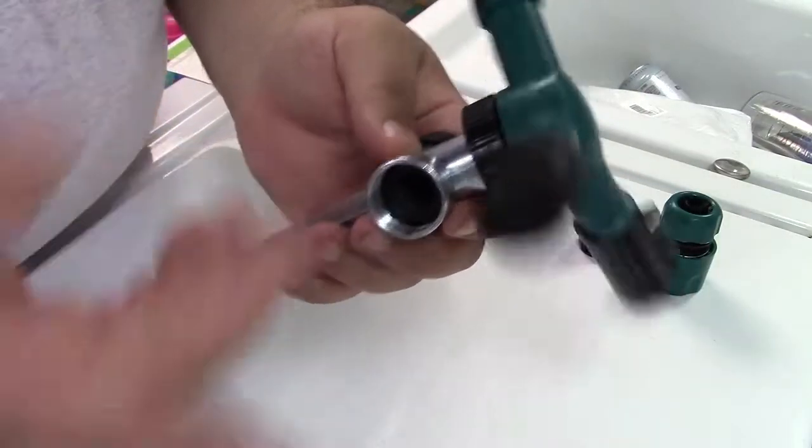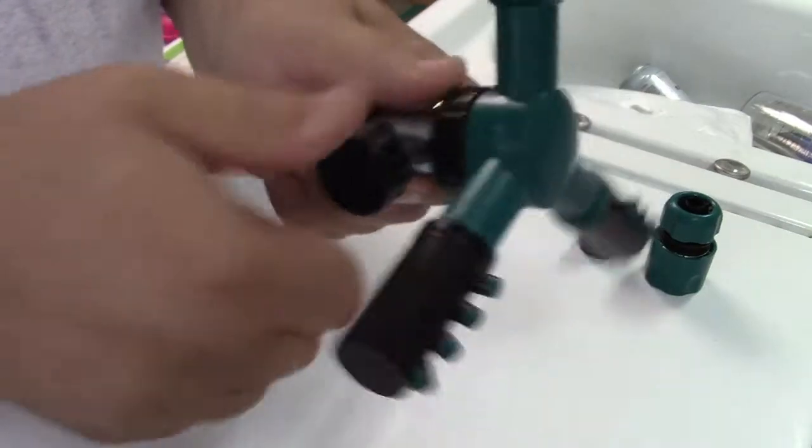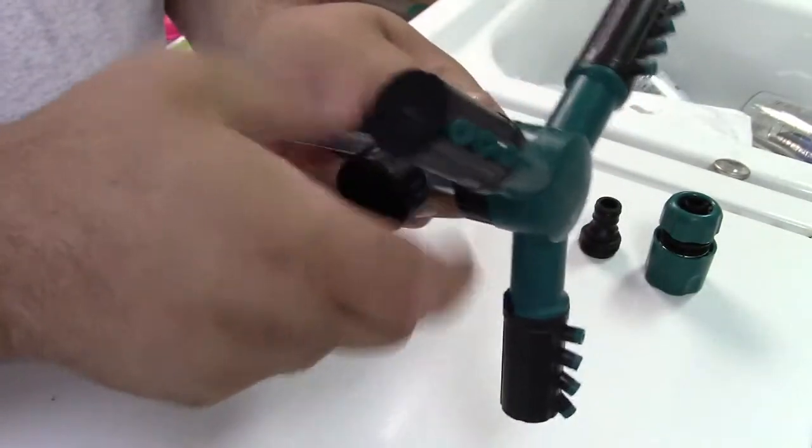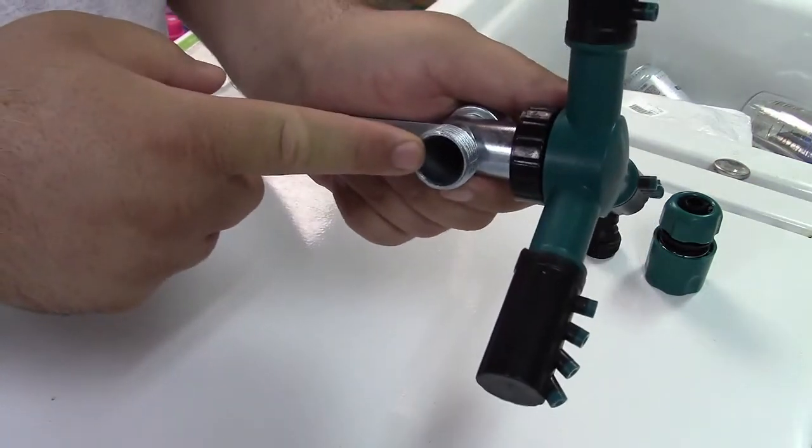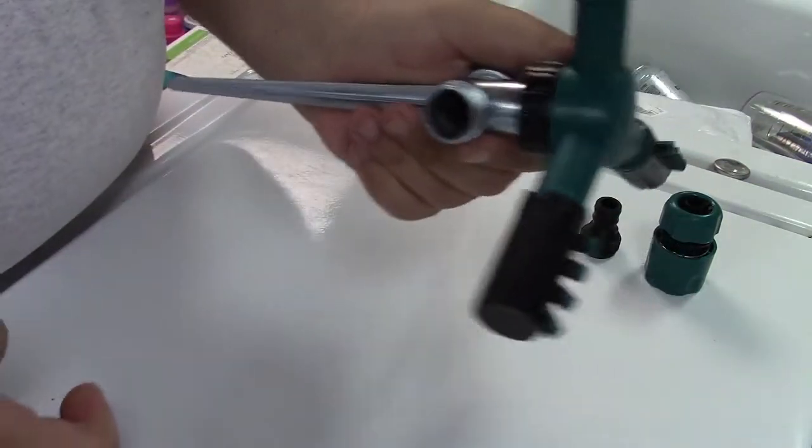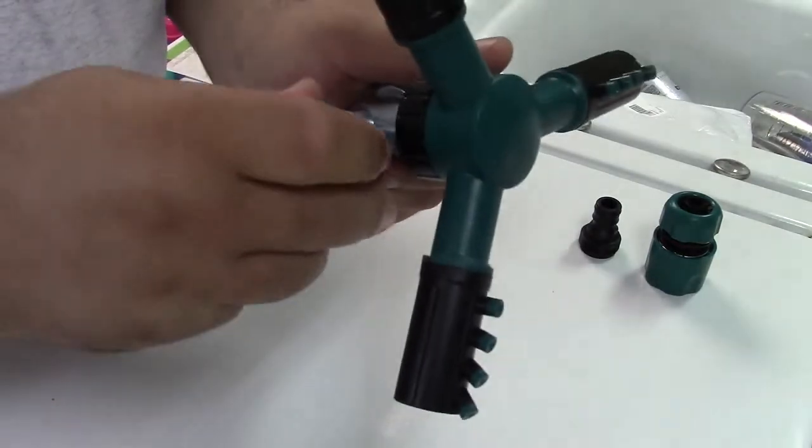Right here you can of course just attach your garden hose and go to town. If you like, this cap unscrews and you can attach another garden hose here to run to another sprinkler, preferably one of these.